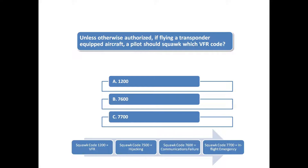Squawk 7500 should be used during a hijacking. Squawk 7600 should be used during a communications failure, and squawk 7700 should be used for an in-flight emergency. See Chapter 4 of the Aeronautical Information Manual for more information on ATC procedures, and Chapter 6 of the Aeronautical Information Manual for emergency procedures.